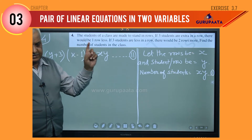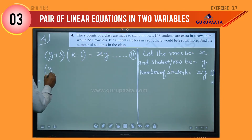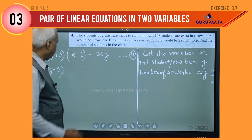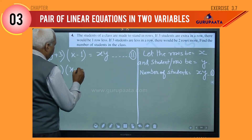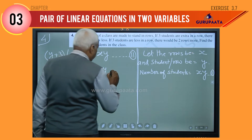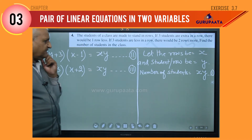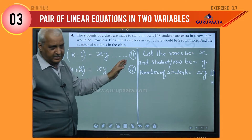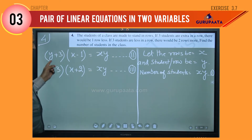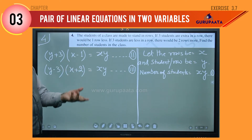Now the second condition: if three students are less in a row, y reduces by 3, and the number of rows increases by two more, so it becomes x plus 2. That is also equal to x·y because the total number of students is not changing. So we have three equations. We will use equations two and three to find x and y, and equation one to find the total number of students.